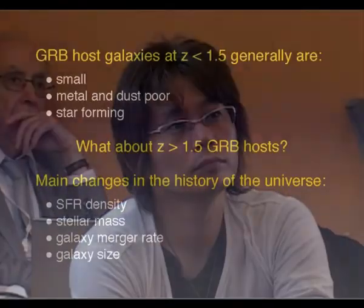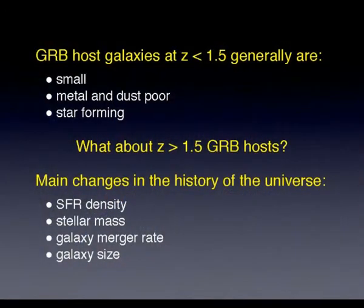The problem is that it's difficult to detect these galaxies because normally they're very faint, but we're starting to have some ideas. When you want to learn this, you have to consider that the universe had some major changes from redshift 2 to now, about star formation rate, stellar mass, galaxy merger rate, and also galaxy size. We are talking about the general population here.